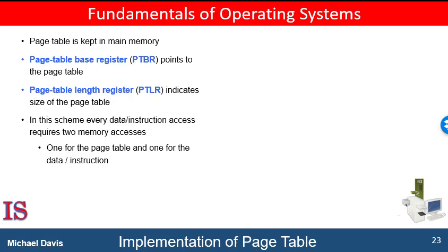When the CPU scheduler selects a process for execution, it must reload the user registers and the appropriate hardware page table values from the stored user page table. The hardware implementation of the page table can be done in several ways. In the simplest case, the page table is implemented as a set of dedicated high-speed hardware registers, which makes page address translation very efficient. However, this approach increases context switch time, as each register must be exchanged during the context switch. This is satisfactory if the page table is reasonably small — say, 256 entries.